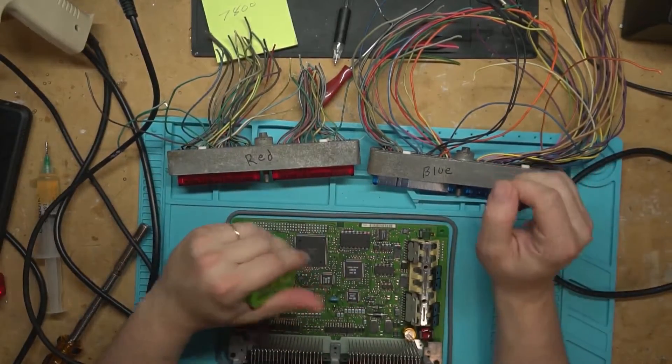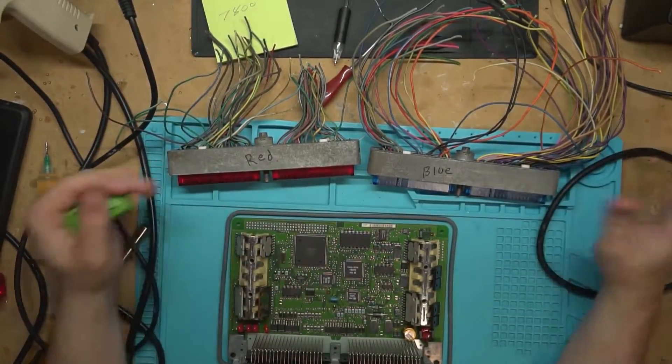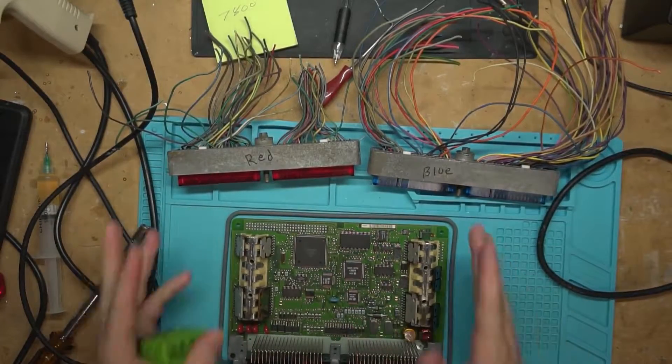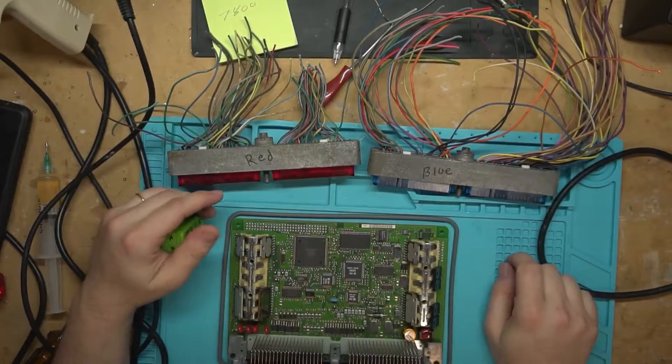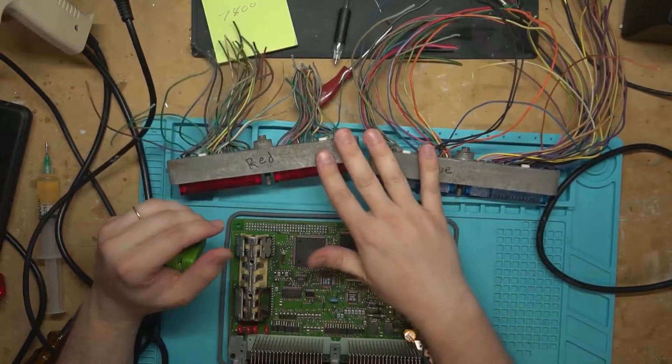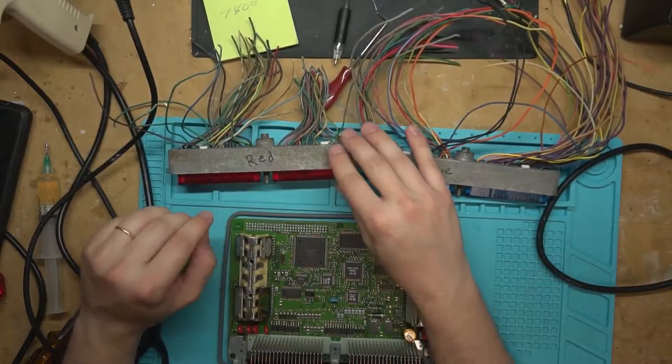Coming up soon is part three of programming these GM computers. This is a P-59 sitting in front of us, but I'm building a harness now for doing the P-01s or the 0411 PCM.